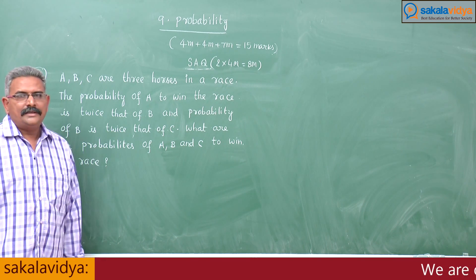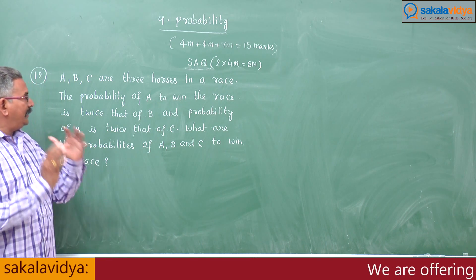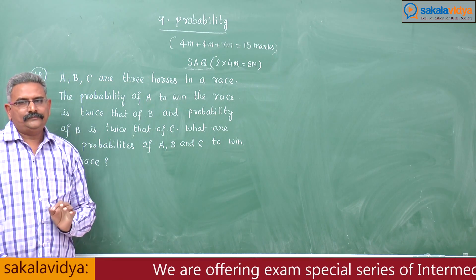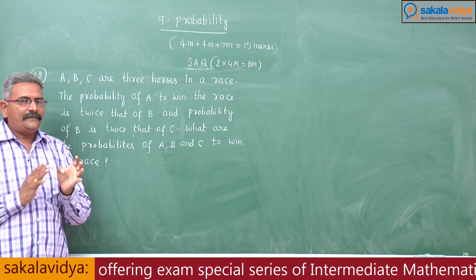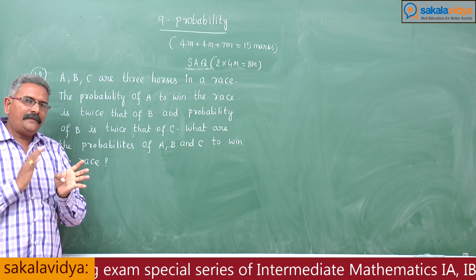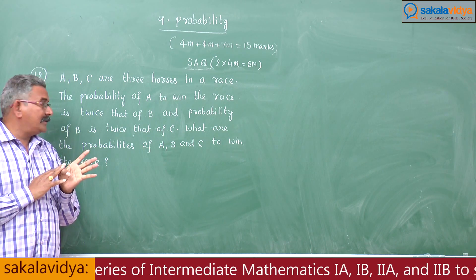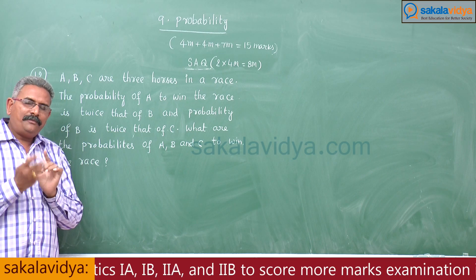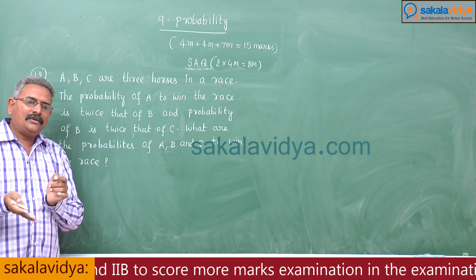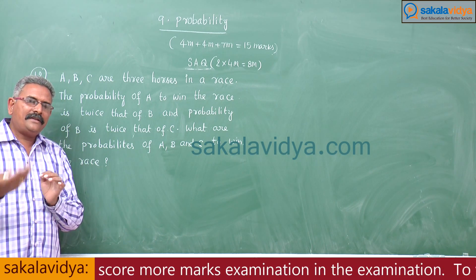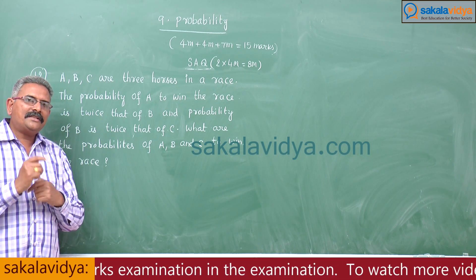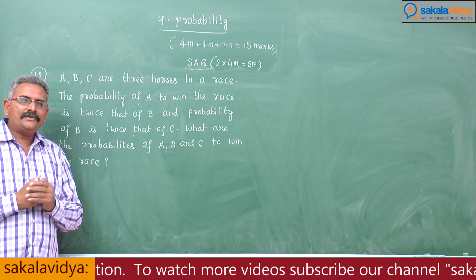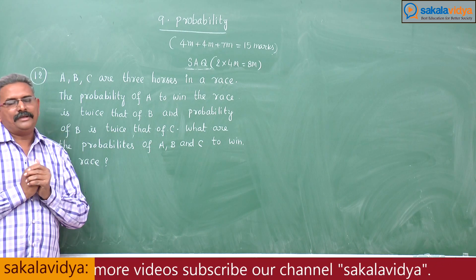So, that means in this race three horses are participating. If A wins the race, B and C lose. If B wins, A and C lose. If C wins, A and B lose. That means A, B, C are mutually exclusive events — one thing to remember.